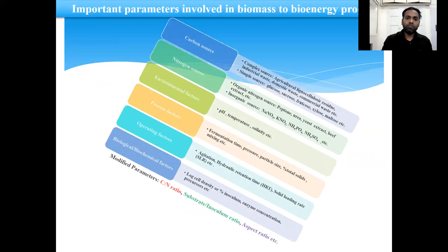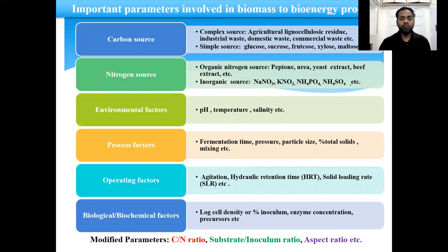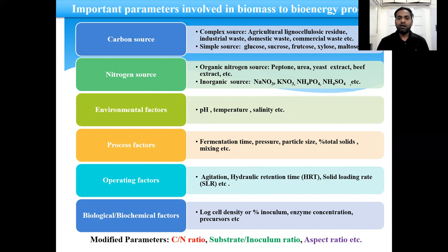So these are some important parameters involved in this process which play a very important role in the process yield, productivity, and efficiency. The parameters like carbon source comprise complex carbon source such as agriculture residues, industrial waste, domestic waste, and commercial waste, and simple carbon source. Then nitrogen source such as organic nitrogen source, peptone, urea, yeast extract, and beef extract. Then inorganic nitrogen source such as potassium nitrate, sodium nitrate, ammonium phosphate, ammonium sulfate, etc.